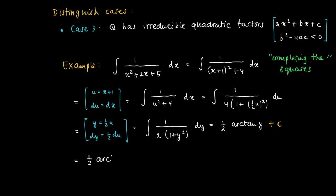Now we can work back, so we get a half times arc tangent y, but y equals a half times u, so a half times arc tangent u plus c. Realize that u relates to x in the sense that u equals x plus 1, to get the final answer: a half times arc tangent of a half times x plus 1 plus c.